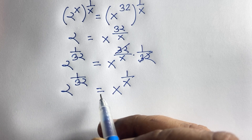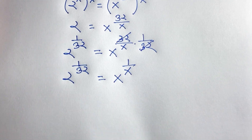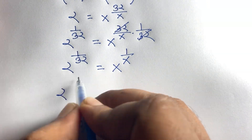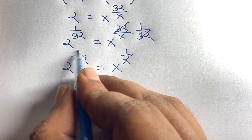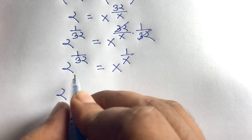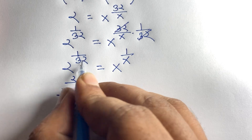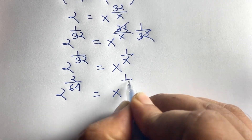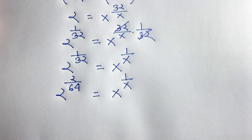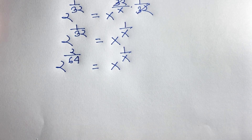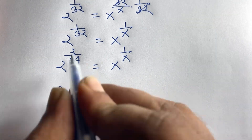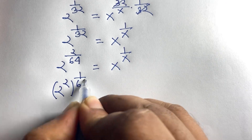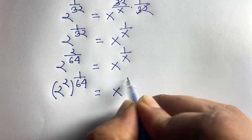Both sides are not equal yet. So how to make them equal? I multiply this exponent by 2: 2 times 1 is 2, over 2 times 32 is 64. So 2 to the power 2 over 64 is equal to x to the power 1 over x.